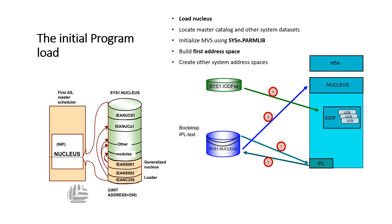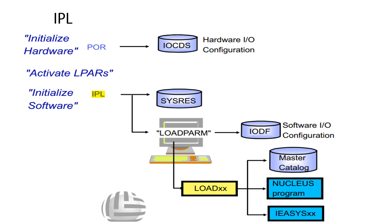During initialization or IPL of a system, the operating system operator provides two critical pieces of information, either directly from the IPL screen or indirectly from the load profile or HMC. During the nucleus initialization process, the nucleus and other system parameters are loaded. The master catalog provides pointers to other data sets used throughout the system.